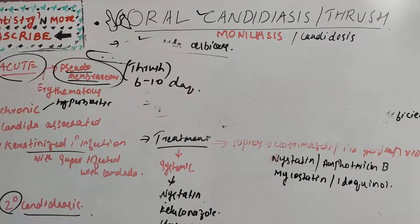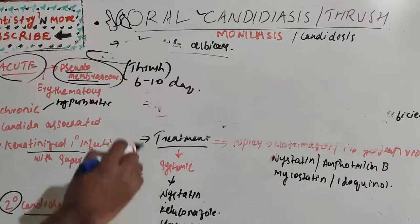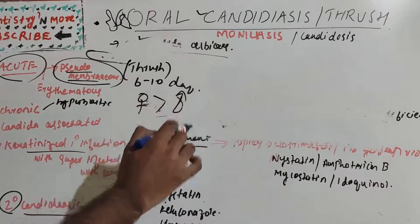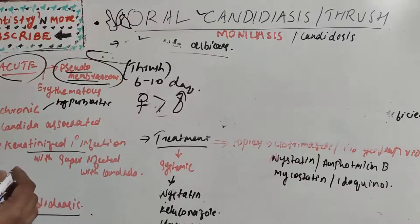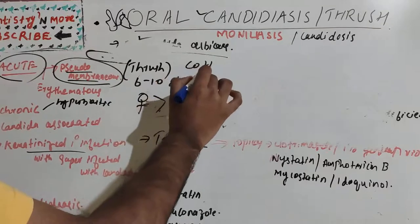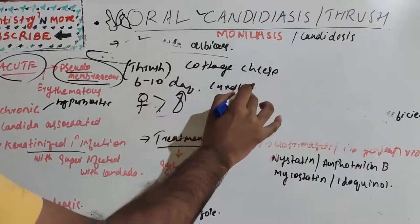There will be soft whitish or bluish-white patches on the oral mucosa, which are mostly painless and removed with little difficulty. In adults, the site is the roof of mouth, retromolar area, and mucobuccal fold; it is more commonly seen in females than males. Symptoms include rapid onset of bad taste, discomfort from spicy food, burning sensation, and white plaque-like pearly-white or bluish-white lesions resembling cottage cheese or curdled milk.